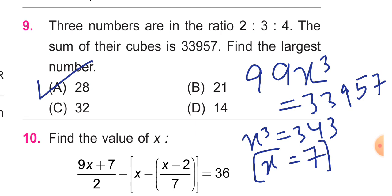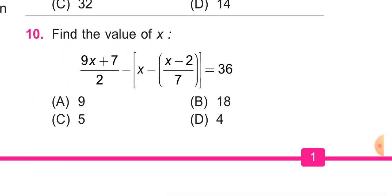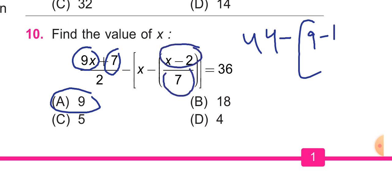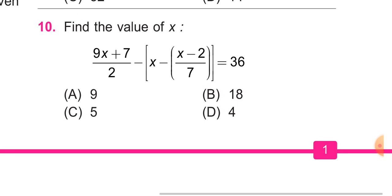Question number 10: find the value of x. 9x plus 7 whole upon 2, we can check by putting value 9. 9 times 9 is 81, plus 7 is 88, upon 2 is 44. 9 minus 2 is 7, upon 7 is 1. 44 minus 8 is 36. So LHS equals RHS, 9 is the answer.